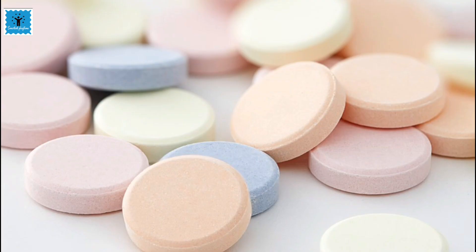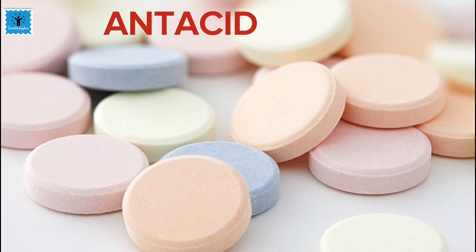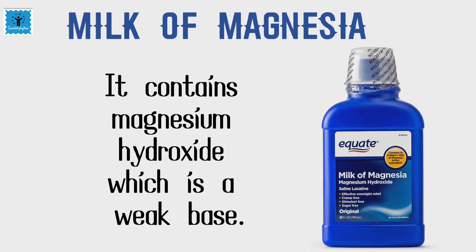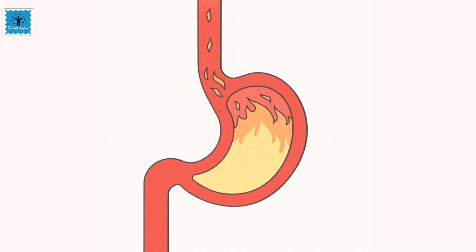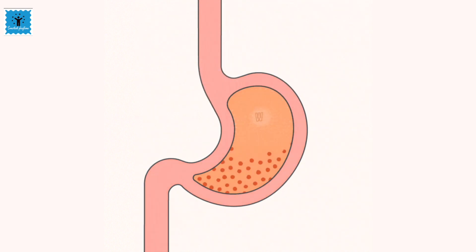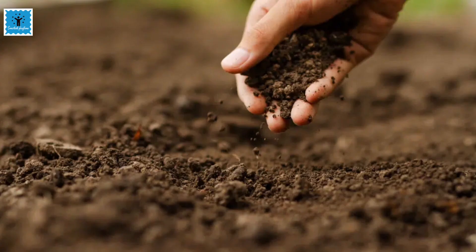To cure this, we use some bases like antacids. One such example is milk of magnesia. It contains magnesium hydroxide, which is a weak base. It neutralizes the effect of excessive acid and gives relief from indigestion.